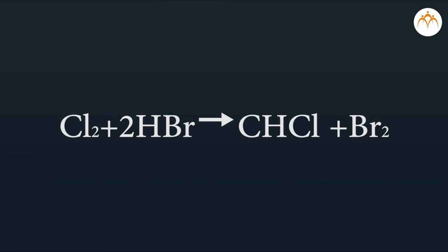Nonmetals do not react with dilute acid except halogens. Cl2 plus 2HBr gives 2HCl plus Br2. Chlorine reacts with dilute hydrobromic acid to form hydrochloric acid and bromine.